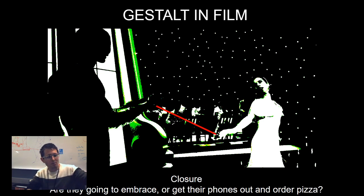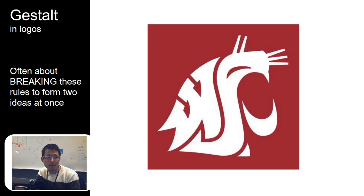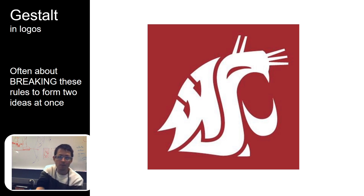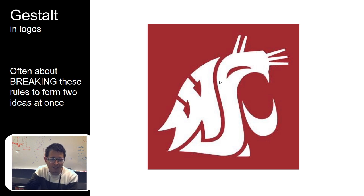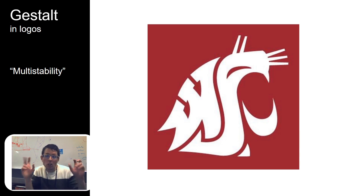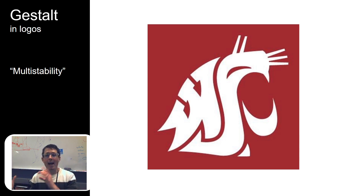And then closure — somehow we're able to draw lines from their eyes, from their hands, and we understand that they're pulling away or going towards each other to embrace. In logos, you see Gestalt elements all the time. Often times it's about breaking these rules, a sense of playfulness, and trying to trick the mind — often times trying to make two forms visible at once. This is the WSU logo. I remember I was like 17 when somebody finally pointed out that there's a secret kitty cat spelling WSU in there. This idea of two things at the same time is called multi-stability. The FedEx logo is another one — it's simultaneously the letters and the arrow embedded inside the logo.